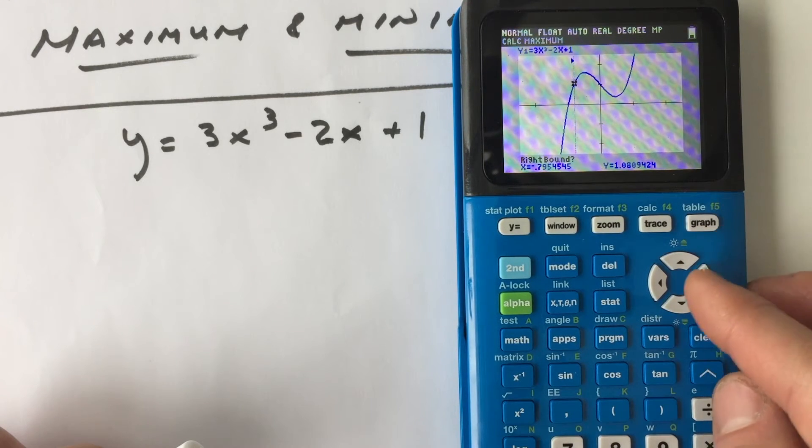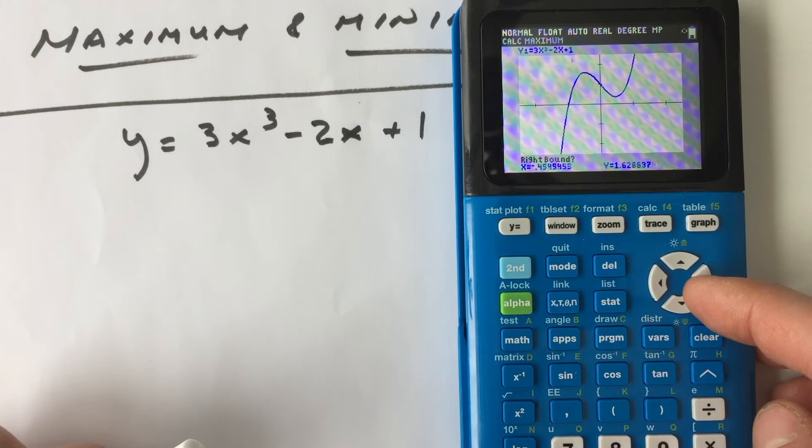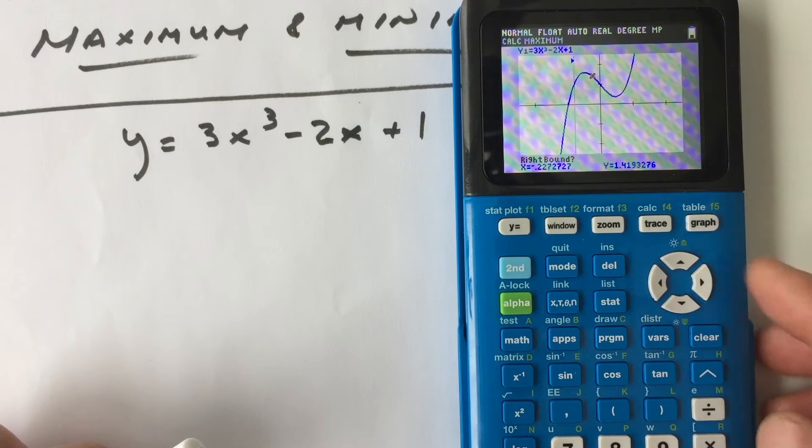And then it says right bound now. So you want to arrow a little bit to the right of that high point. And then again, press enter.